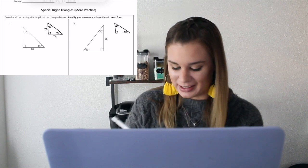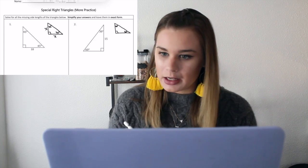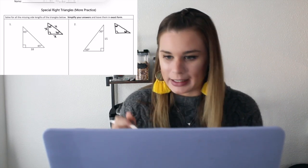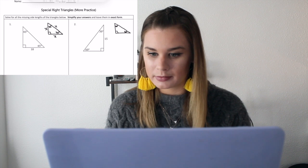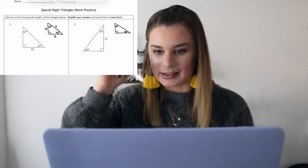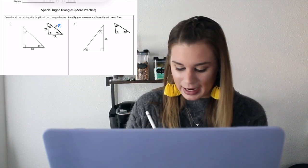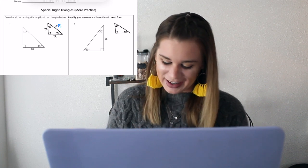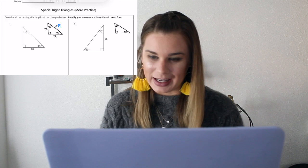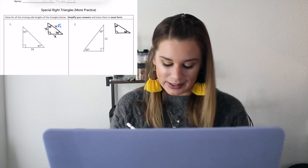We learned that 45-45-90 triangles have a rule. If one leg is x, what does the other leg have to be for a 45-45-90? Also x — good. Then you take the length of your leg and multiply it by what to get your hypotenuse? The answer is square root of 2. So for this problem, if one leg is 18, what does the other leg have to be?